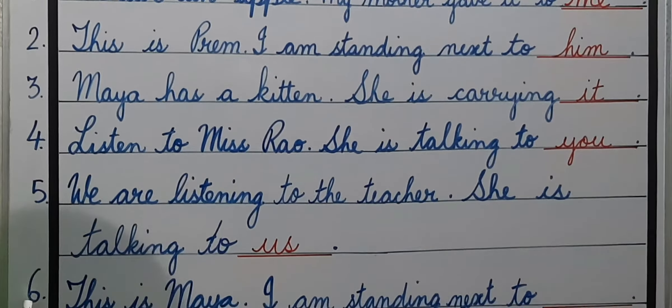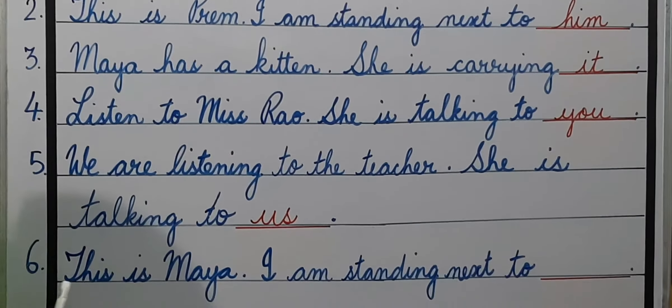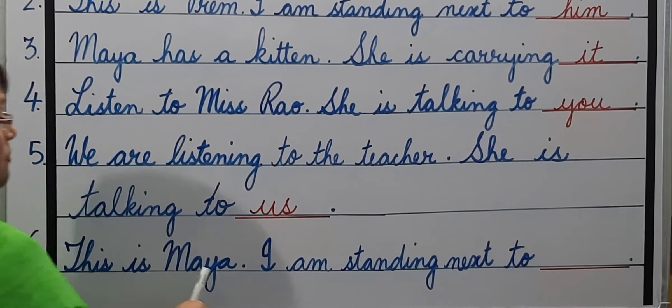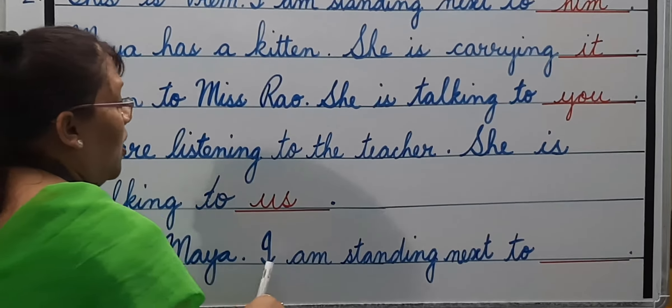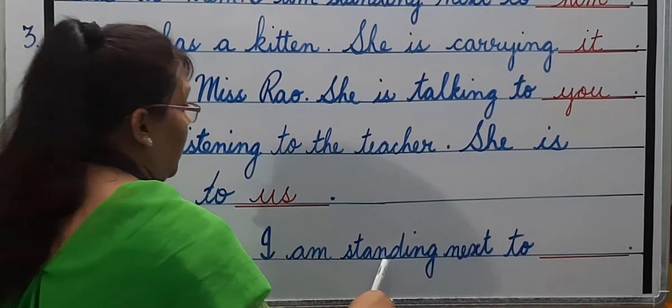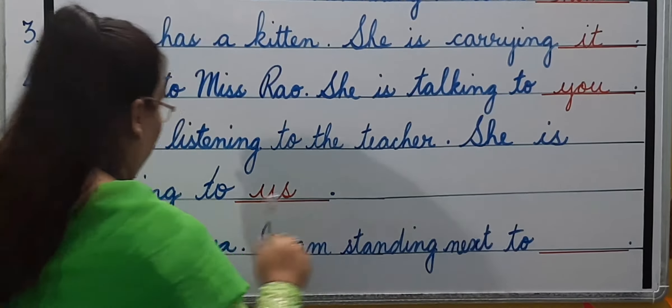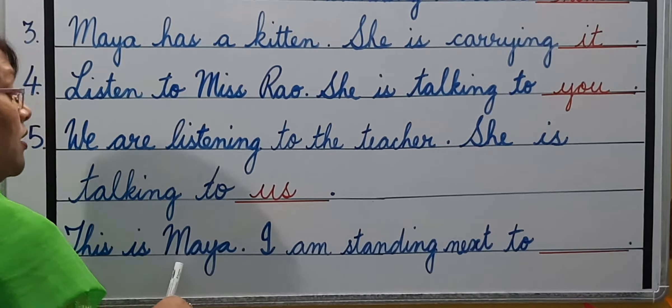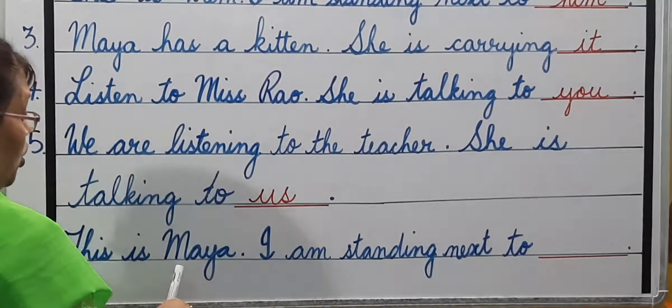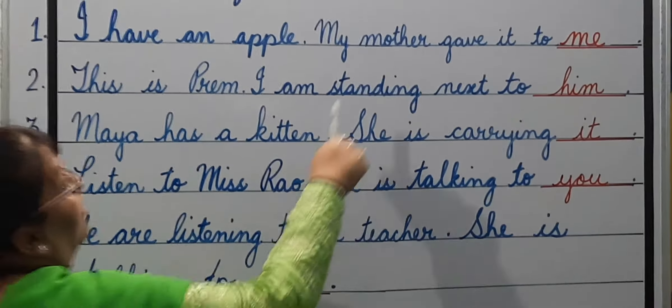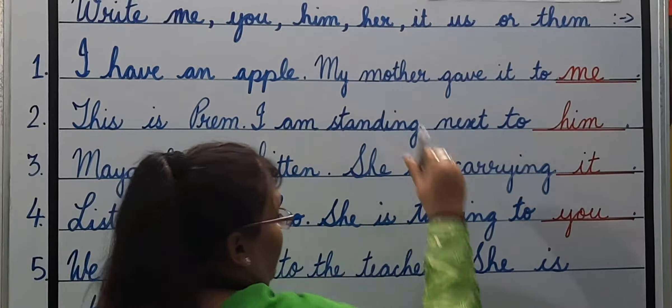Number six: This is Maya. I am standing next to — Maya is a girl, so the answer is her.